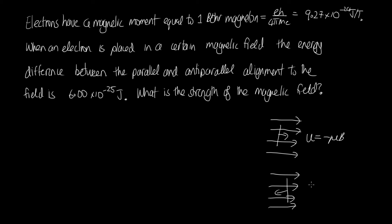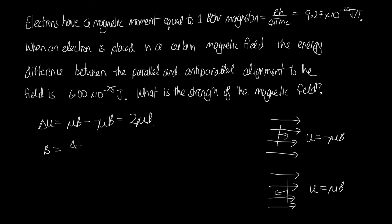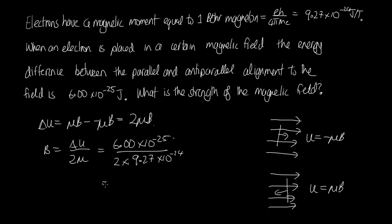In the anti-parallel case the potential energy is equal to plus mu·B. The energy difference between the two cases is mu·B minus (minus mu·B), which equals 2·mu·B. So to find the magnetic field strength B, it equals the energy difference divided by two mu. This gives 6.00 times 10 to the minus 25 divided by two times 9.27 times 10 to the minus 24, which on the calculator gives 0.0324 teslas as the magnetic field strength.